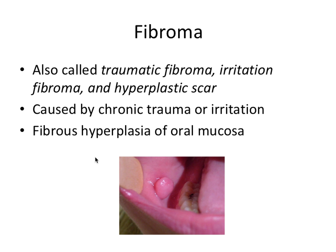First we're going to talk about the fibroma, also called the traumatic fibroma, irritation fibroma, and hyperplastic scar. All of these alternate names point to the fact that a fibroma is caused by chronic trauma or irritation. As far as connective tissue tumors are concerned, this one is very benign and actually pretty common. It is specifically fibrous hyperplasia of the oral mucosa — in this case the buccal mucosa, it looks like.